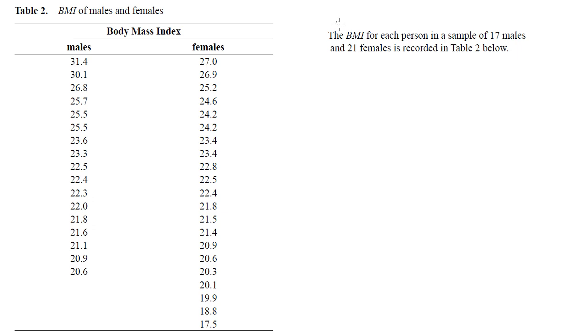This is how you might see this tested on an exam. This is a question that appeared in 2004 on the exam 2, which was the extended response. And the question said, the BMI for each person in a sample of 17 males and 21 females is recorded in table 2 below. And then there was this table, which shows you these figures, the BMI for male and female.